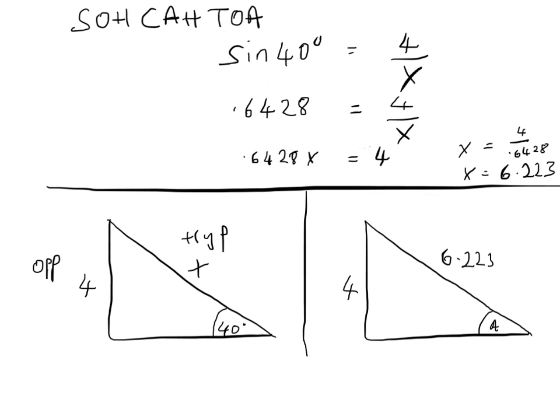To summarize what we did: first, we labeled the two sides we were given and ignored the empty one. That told us we're looking for opposite over hypotenuse, which corresponds to sine. Sine of 40 degrees equals 4 over x. We then solved that equation and found x equals 6.223. That's the second type of problem, and you're going to see that the next one is solved in a pretty similar way.